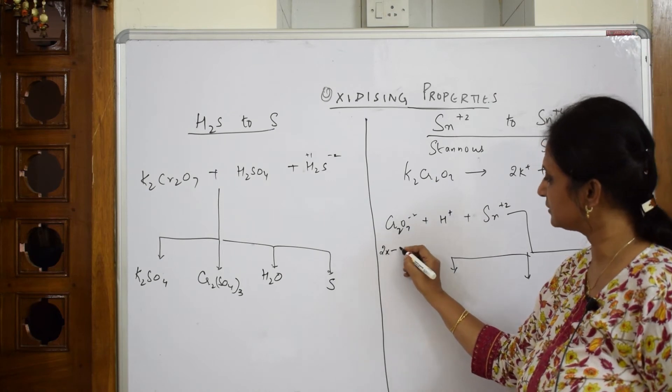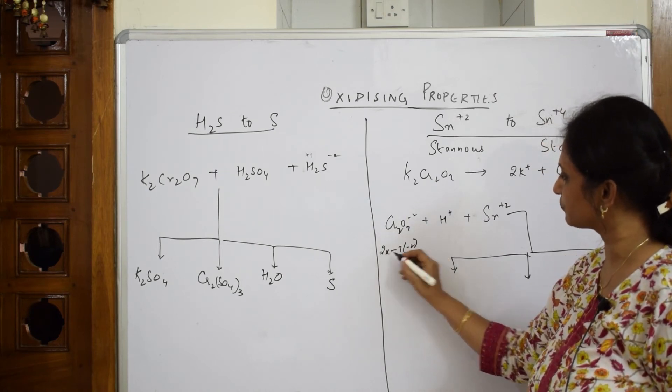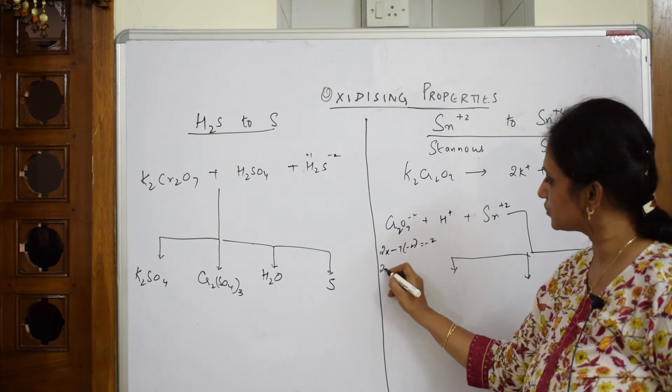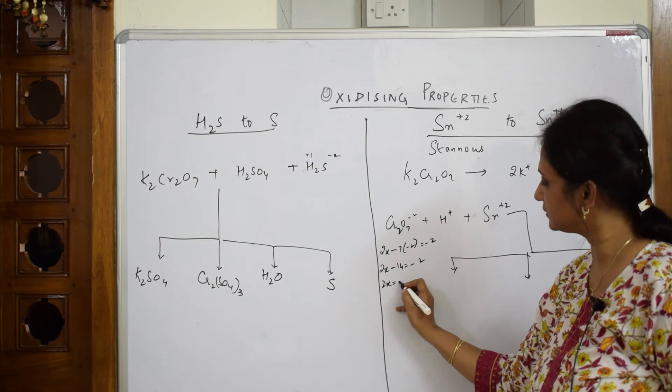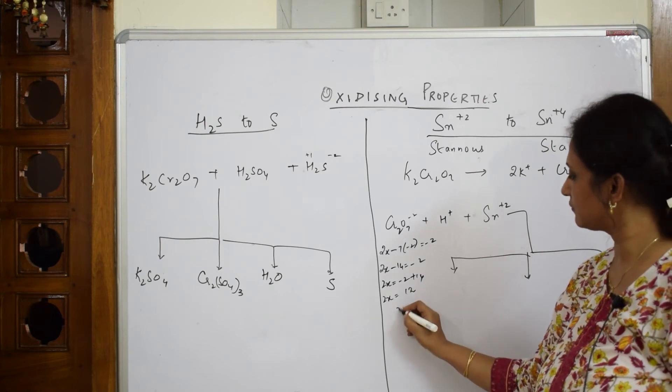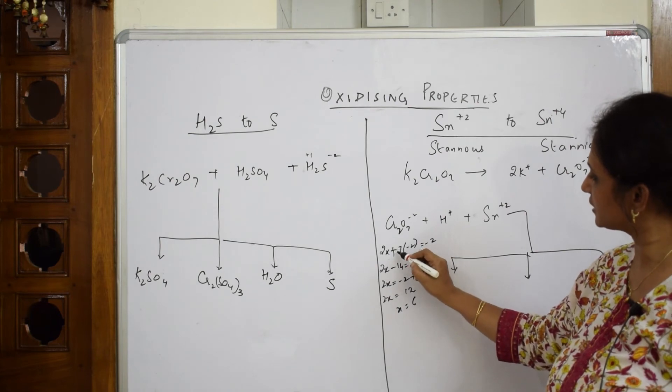What is the valency here? Chromium is 2X - 7 into 2 = -2. So 2X, 14 minus 2. 2X is equal to -2 + 14. 2X is equal to 12. X is equal to 6. Let's see once again. This is 2X, 7. This is plus actually. 14, 12. Here what did I get? I got a valency of plus 6.